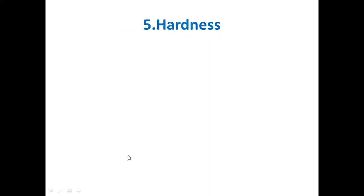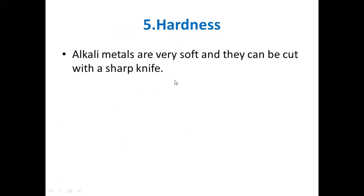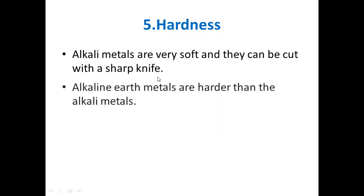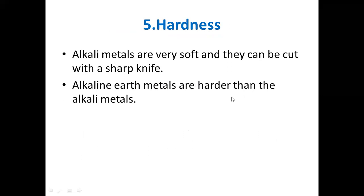The fifth comparison is hardness. Alkali metals are very soft and can be cut with a sharp knife. Alkaline earth metals are harder than alkali metals. For example, sodium metal — unlike typical metals like iron which are hard — is soft enough to be cut with a knife.